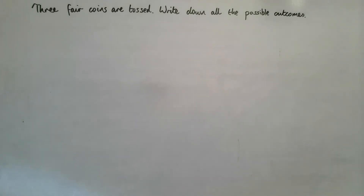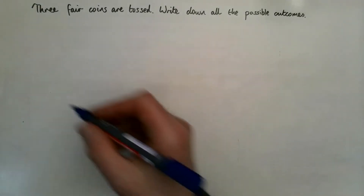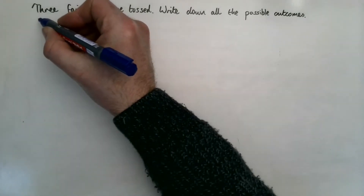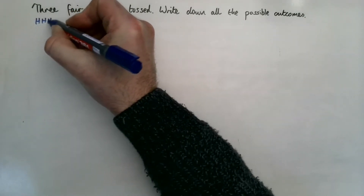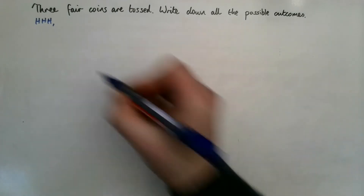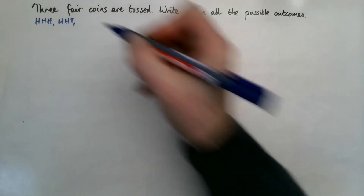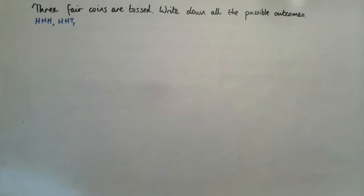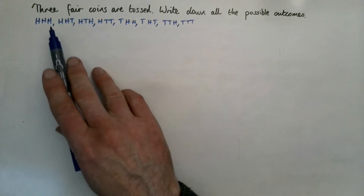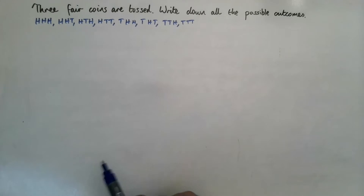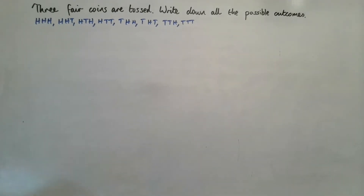Here's our first question: if three coins are tossed, write down all the probabilities. You may remember listing outcomes from Key Stage 3. You could have three heads, two heads and a tail, and so on — there should be eight outcomes in total: four where the first coin is a head and four where it's a tail, all equally likely.